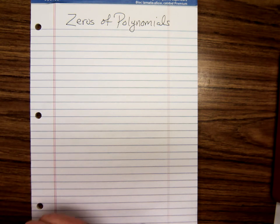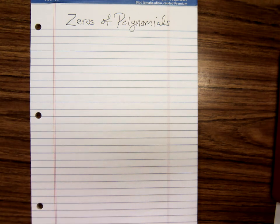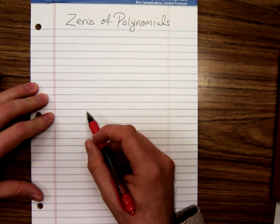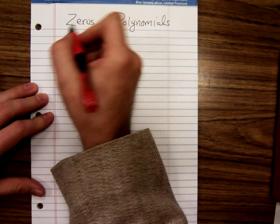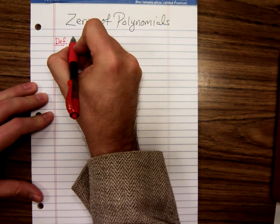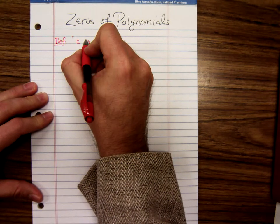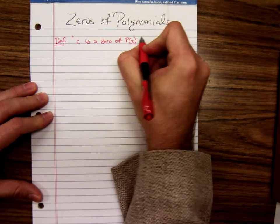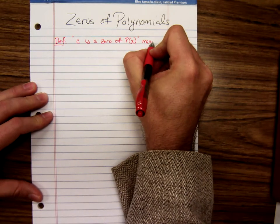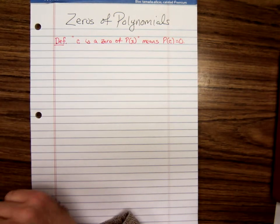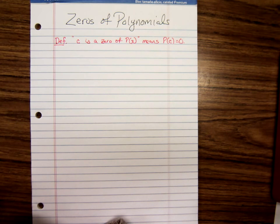Before we get into actually working any problems, let me go ahead and state a definition and a couple of theorems that are going to pop up during this discussion of zeros of polynomials. The first of which is just the definition. What the heck is a zero of a polynomial? Well, the number C is a zero of the polynomial P of X means P of C equals zero. So when we say some number C is a zero of a polynomial, what we're saying is if you plug it into the polynomial you'll get zero.